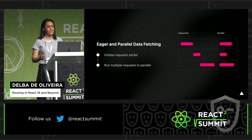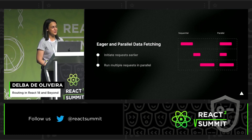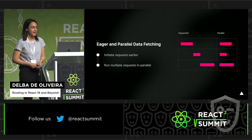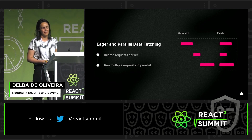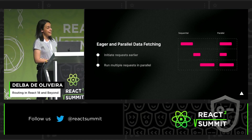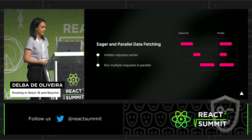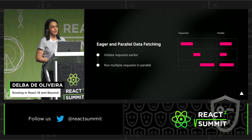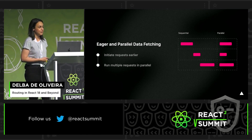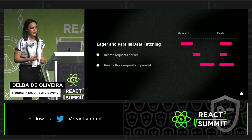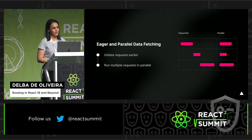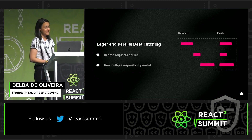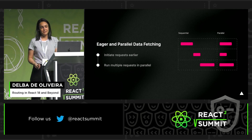Thirdly, we can have more granular control over data fetching. Currently in Next.js, we fetch data on the page level. With this new model, we can fetch data at the segment level. And since we already moved data fetching outside of the rendering code, we can now eagerly initiate those requests in parallel, avoiding waterfalls. Overall, the amount of time it takes to load the content of a route is also reduced. By building a new router with React server components, we're able to achieve three things: reduce the amount of code sent to the client, reduce the amount of work the server has to do, and reduce the amount of time it takes to do that work.